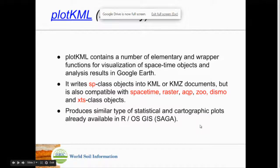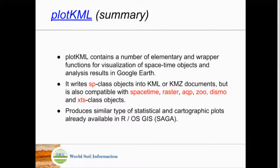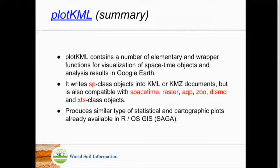plotKML is an R package. The main thing it does is write sp class objects, spacetime and raster class objects, and it also plots trajectory-type objects. You go directly from R to Google Earth — it's a very simple concept. You have geographical or spatiotemporal data and you want to get it quickly into Google Earth.